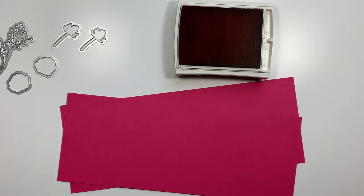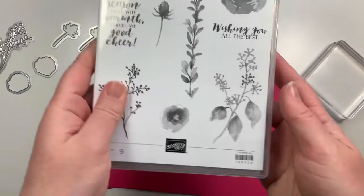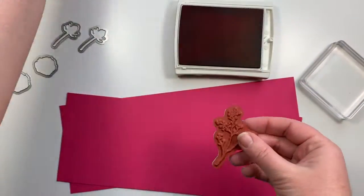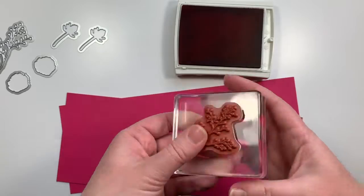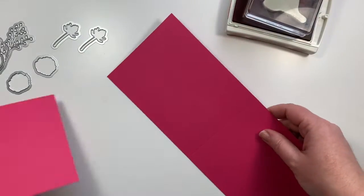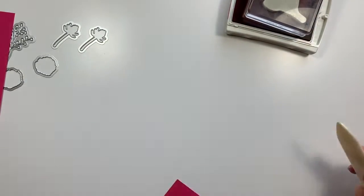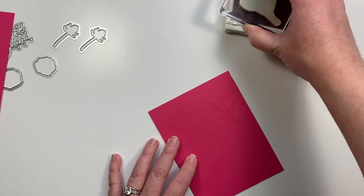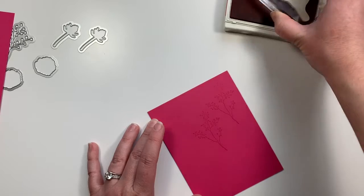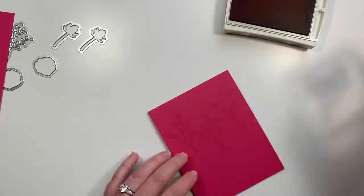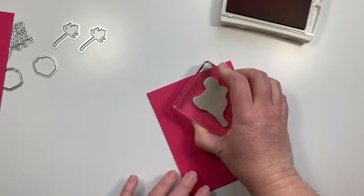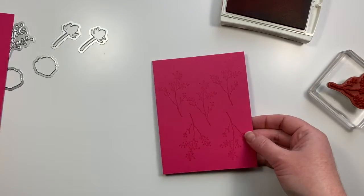Now we're going to do some stamping on our background cardstock. So these are the card bases that I cut earlier. And I'm going to get this background stamp out. The first card that I'm going to stamp is just going to show past the belly band. It's just going to be kind of uniform, just a little bit on the top and a little bit on the bottom. It's nothing too much. It's just very subtle.